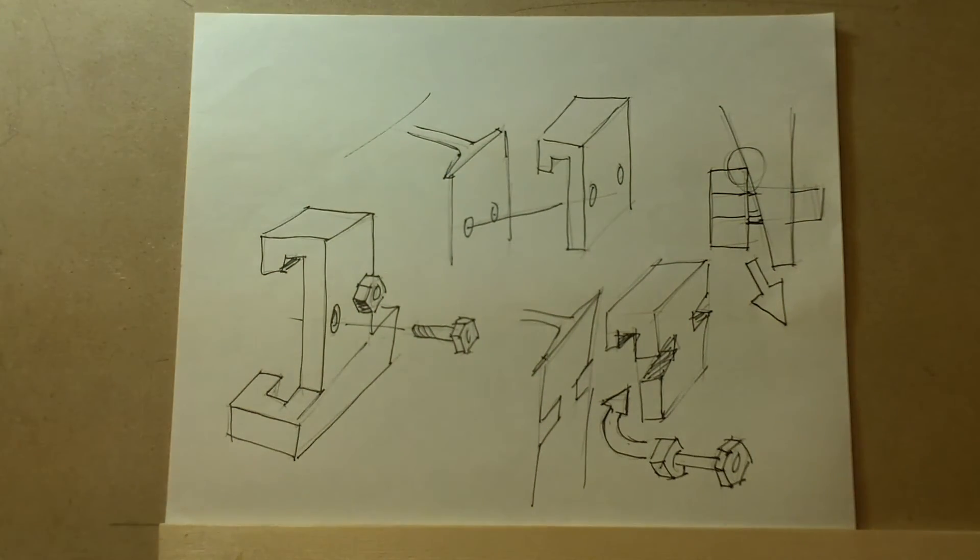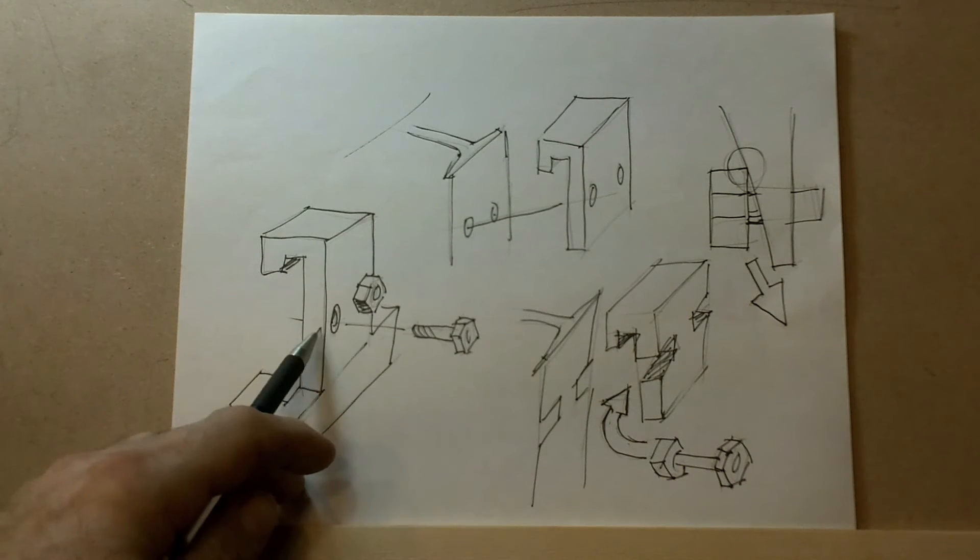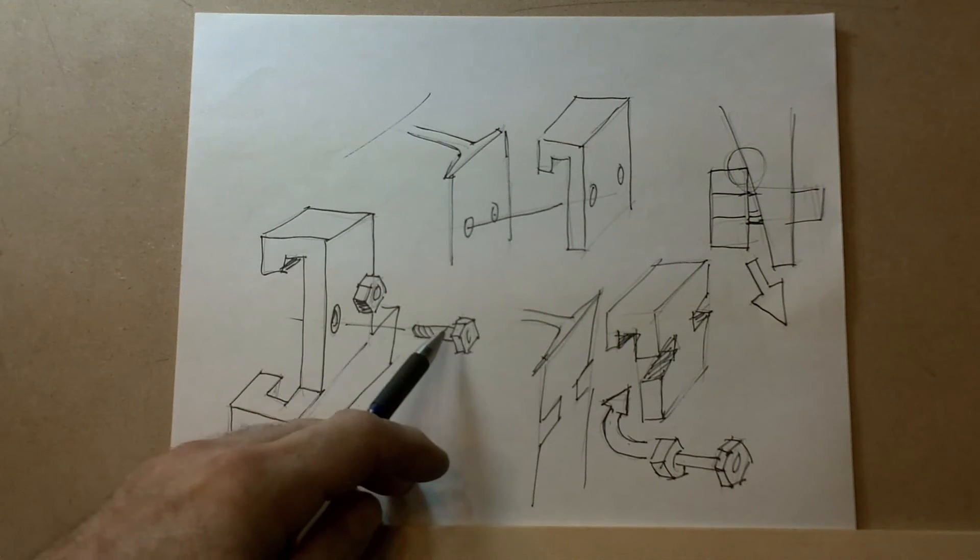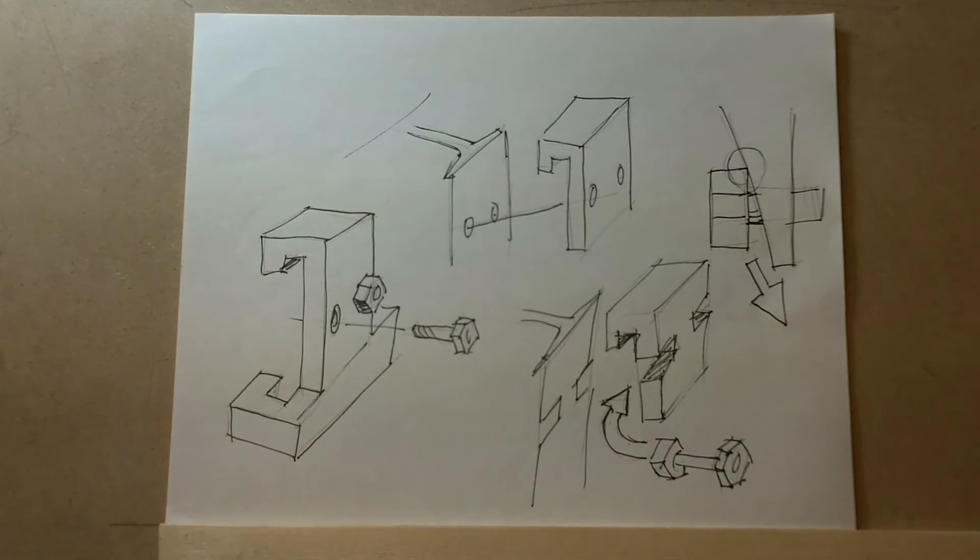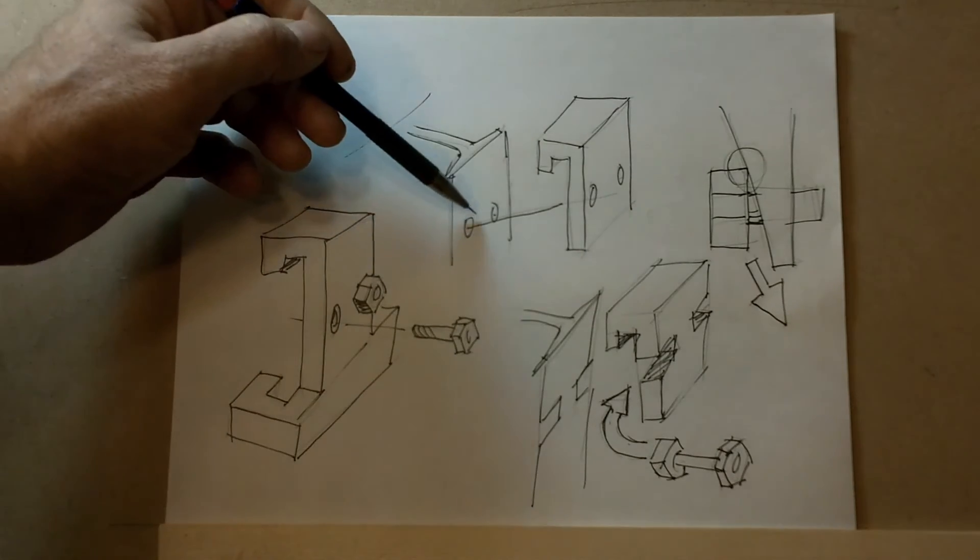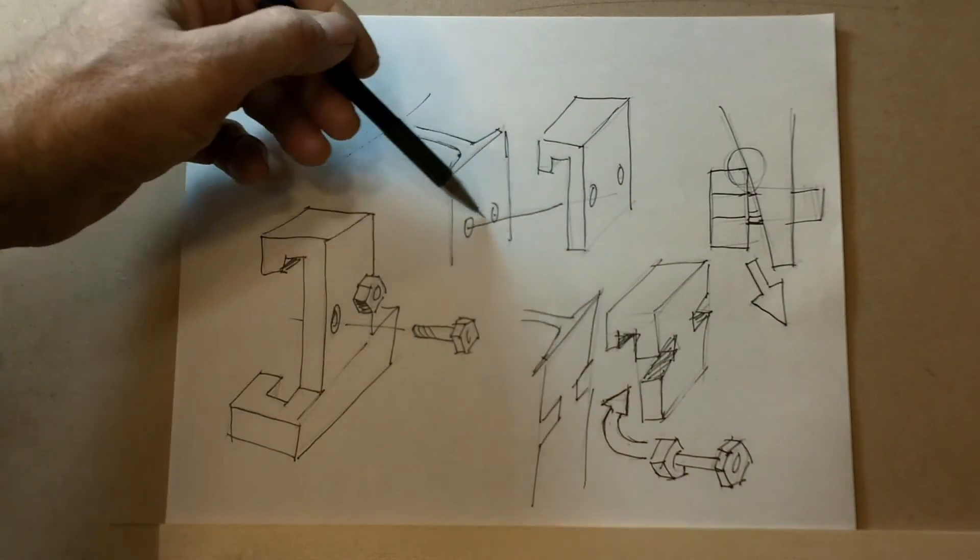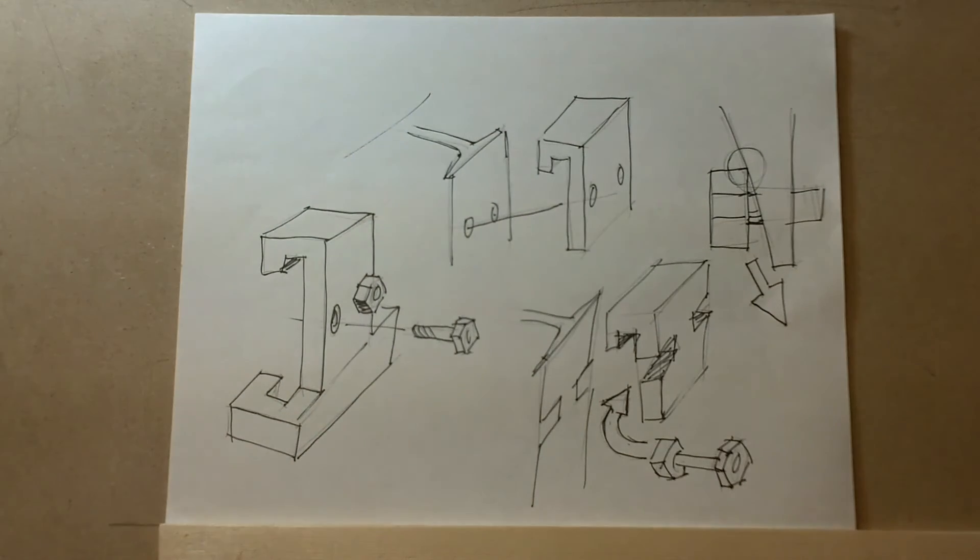My first thought was to lock the bracket in place by clamping it with a bolt threaded through the back plate, or welding on a nut that would do the same thing. Then I thought I could simplify that even further by just drilling holes that lined up through the beam as well as the bracket, and then just bolting the thing in place.